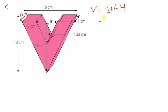The big one is what we'd have if there wasn't a small one cut out of it. So we calculate the whole big one and then subtract the volume of the small one, which is also a triangle. So it's also half base times small h times big H.